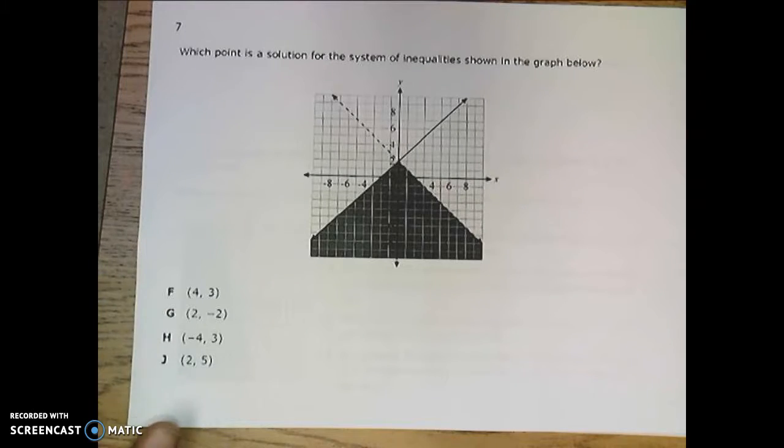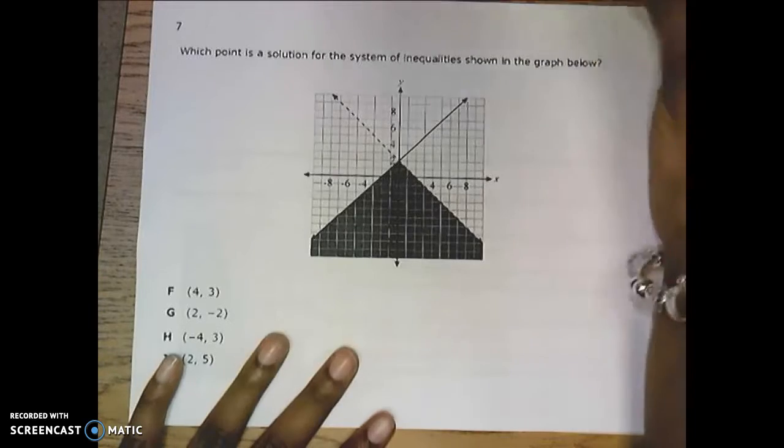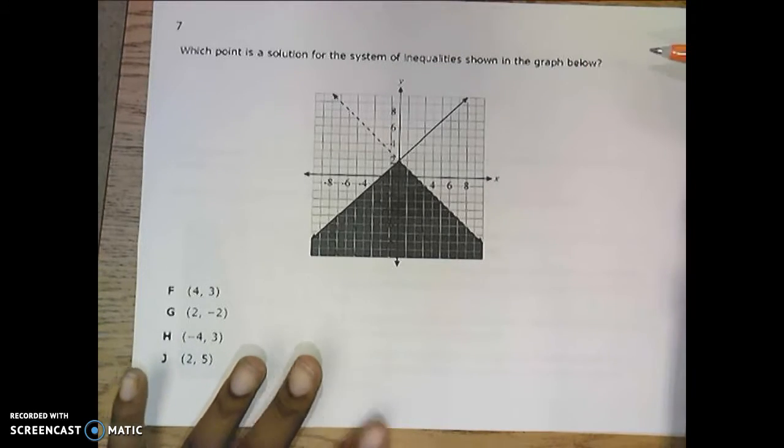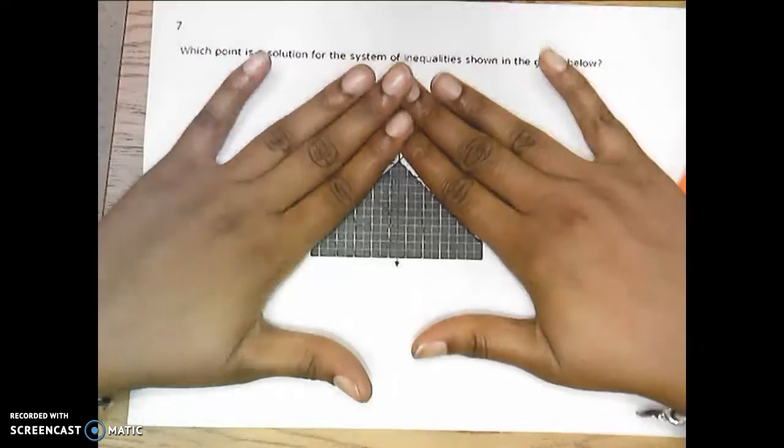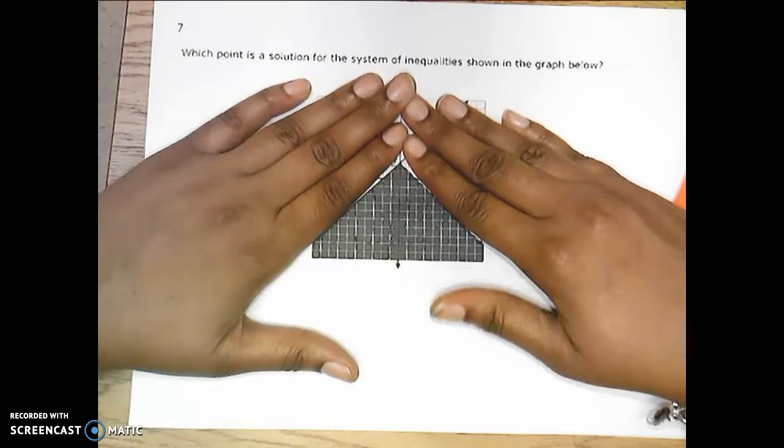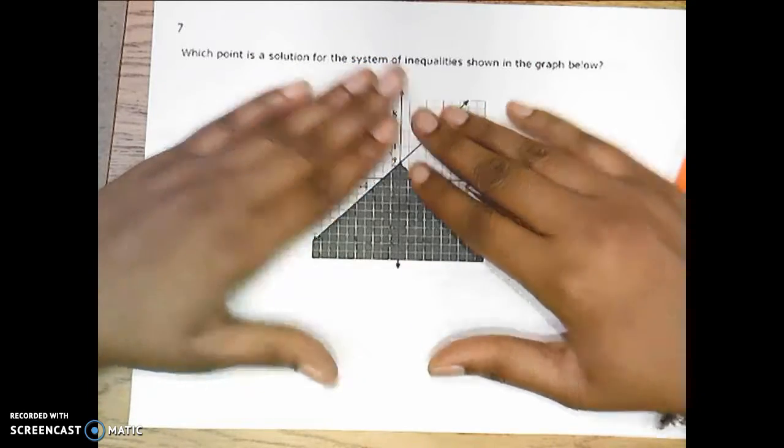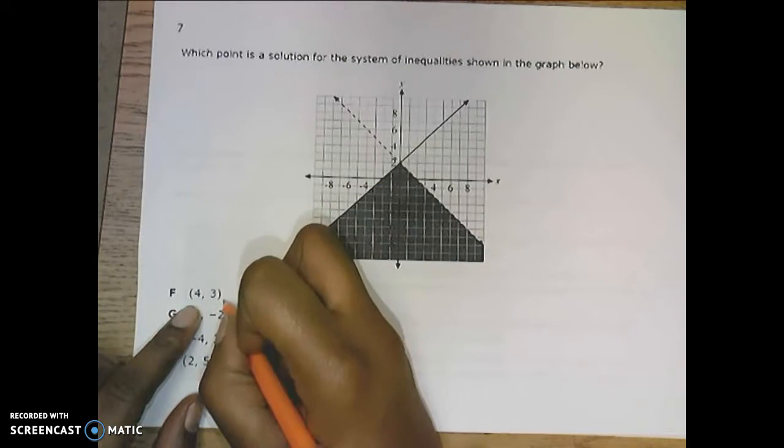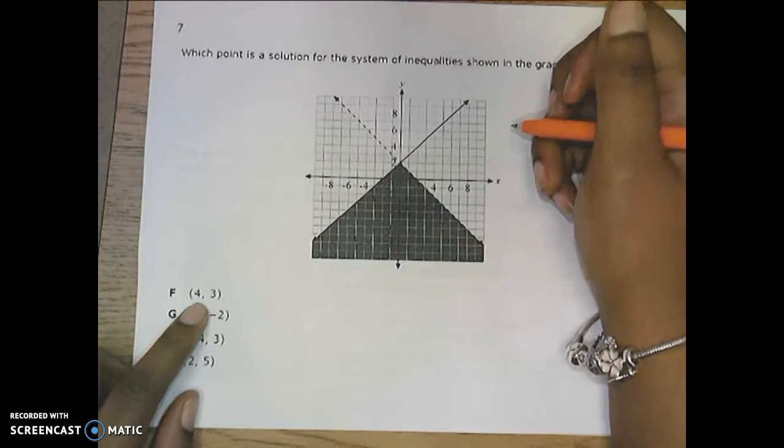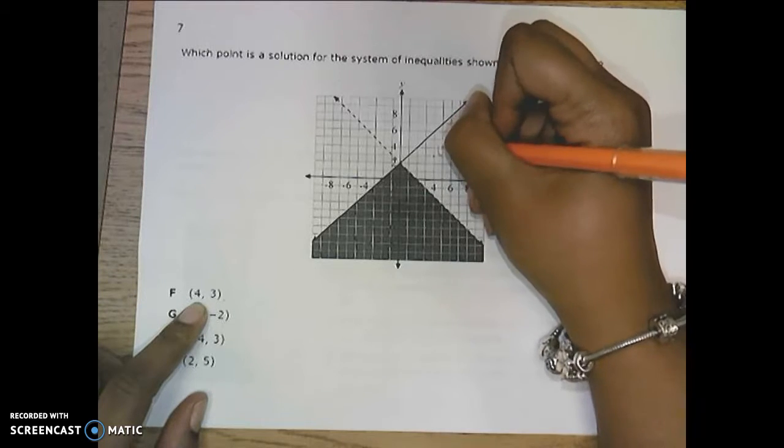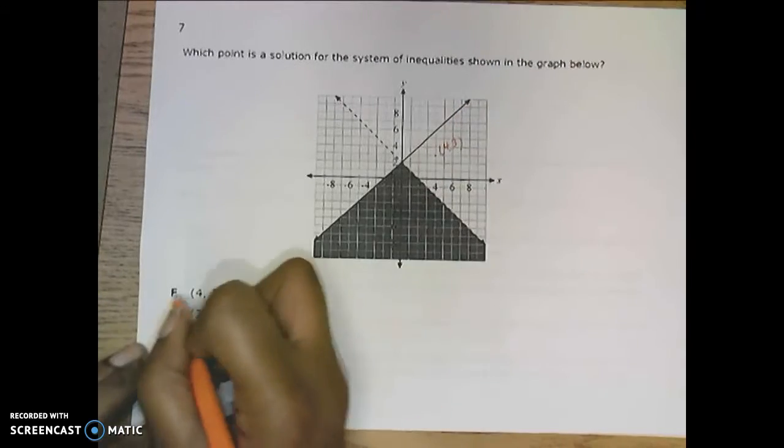One here, I'm hoping you can look at and be able to determine which point is the solution of the system of inequalities. This triangular section in here is all of your solutions. Anything that's not in the overlap section is not going to be a solution. So if we start looking at the points, 4, 3. 4 and up to 3 would be somewhere around here. Not in a shaded region, not a solution.